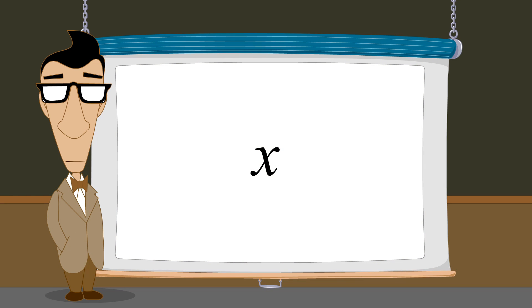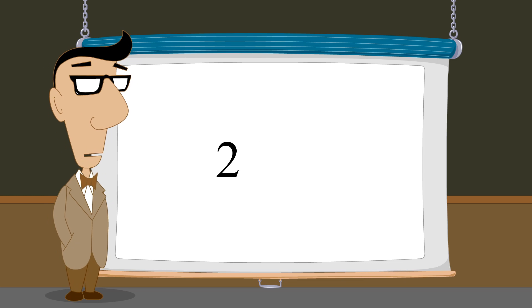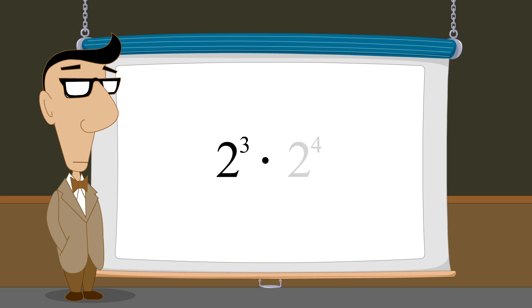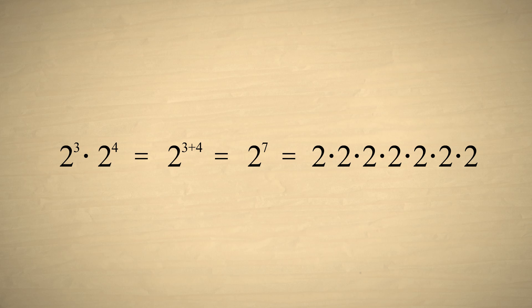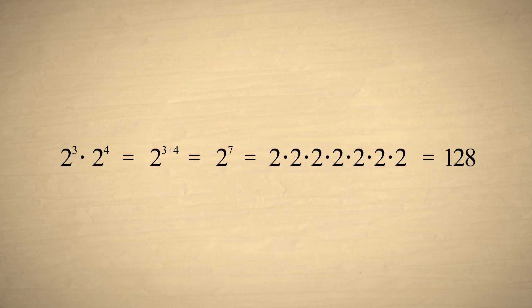In the next example, the terms in the expression have bases which are numbers instead of variables. Let's simplify two cubed times two to the fourth. Adding the exponents, we get two to the seventh power, which is the same as seven twos multiplied together, or one hundred twenty-eight.